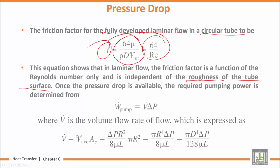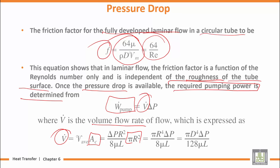When the pressure drop is known, the required pumping power is determined. The required pumping power is related to the volume flow rate. This is for a circular tube.